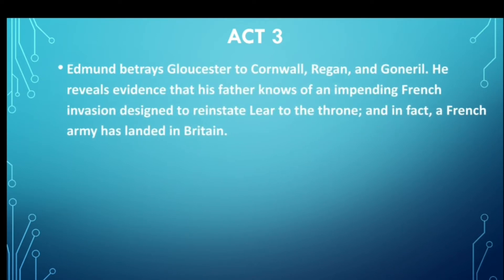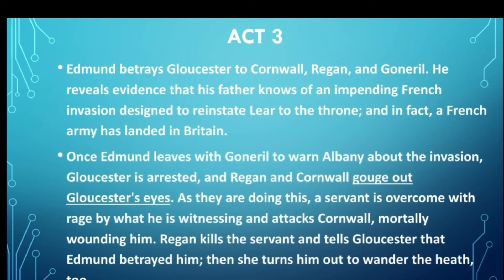Act 3. Edmund betrays Gloucester to Cornwall, Regan and Goneril, revealing evidence that his father knew of an impending French invasion designed to reinstate Lear to the throne, and that a French army has landed in Britain. Gloucester is arrested and Regan and Cornwall gouge out Gloucester's eyes. A servant, overcome with rage at what he is witnessing, attacks Cornwall and mortally wounds him. Regan kills the servant and tells Gloucester that Edmund betrayed him and had him turned out to wander the heath.